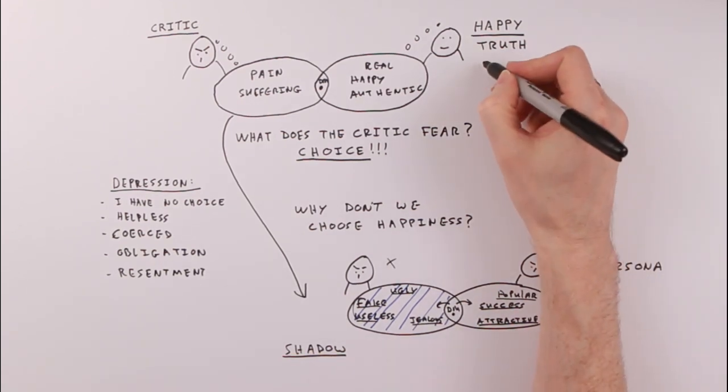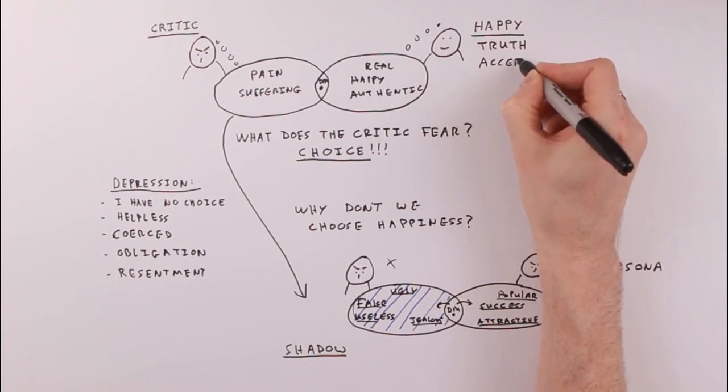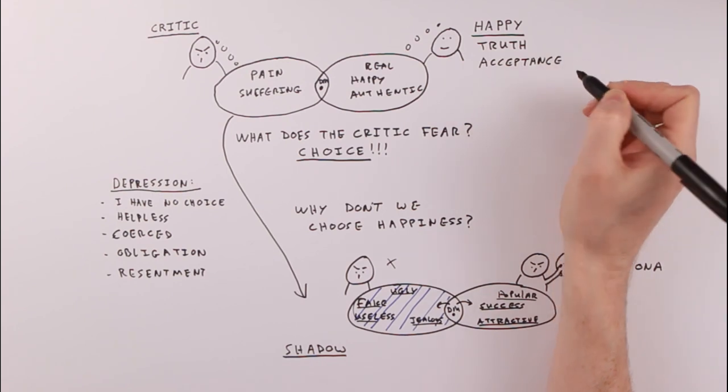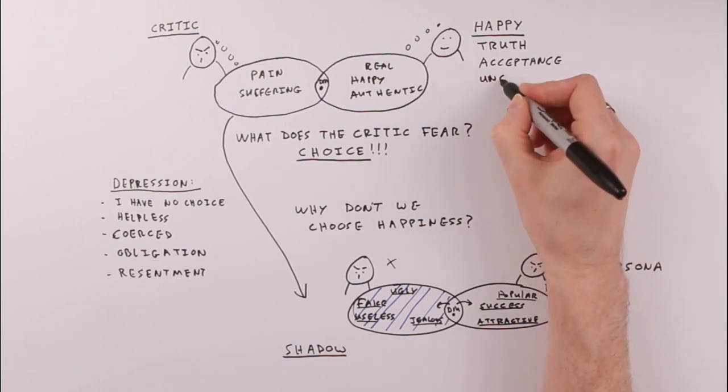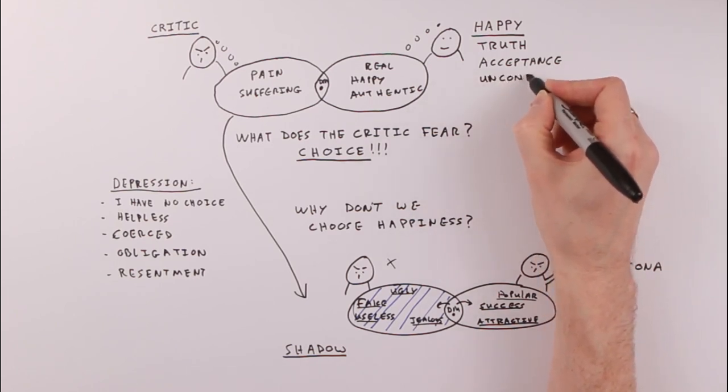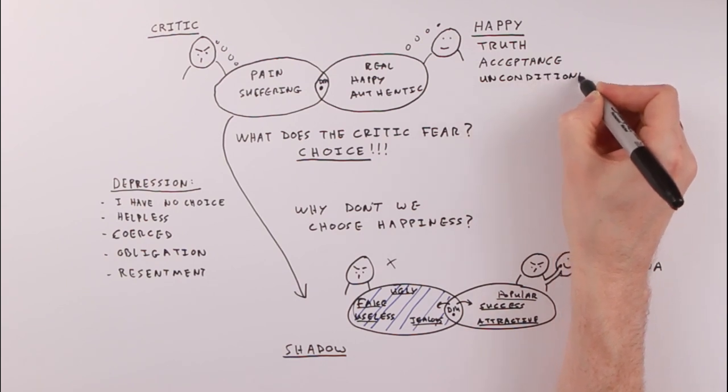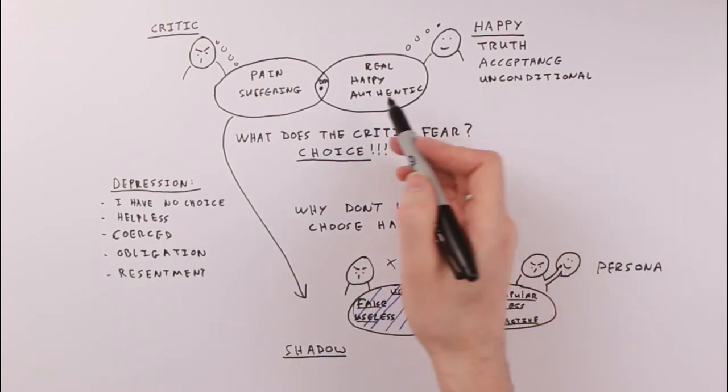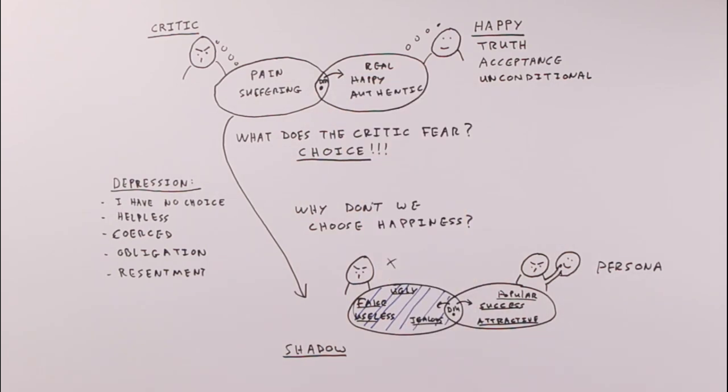Features of this are truth, they are acceptance, something else we might associate with this mindset is unconditional. And this is the real choice we need to start making. We need to start making the choice for authentic happiness.